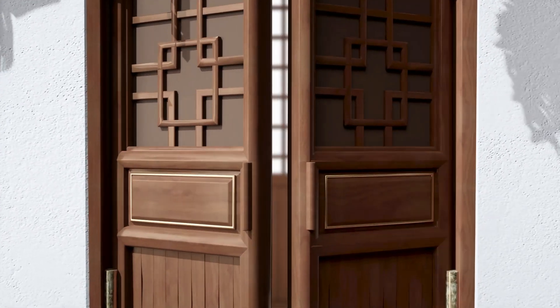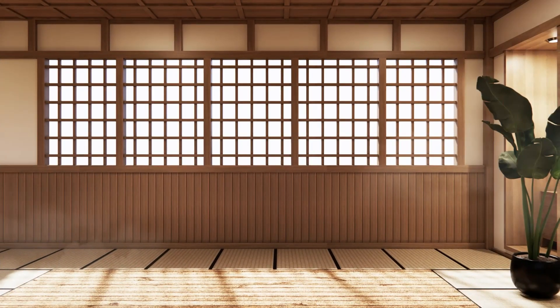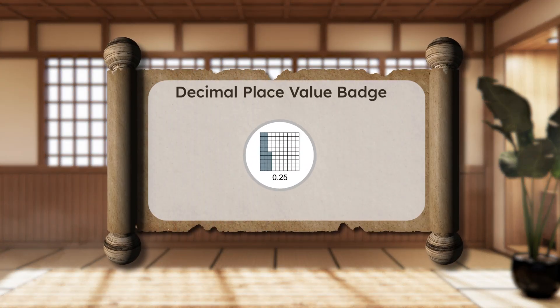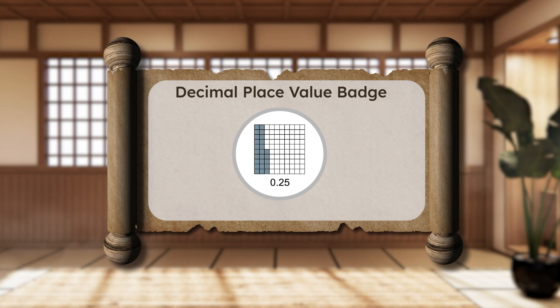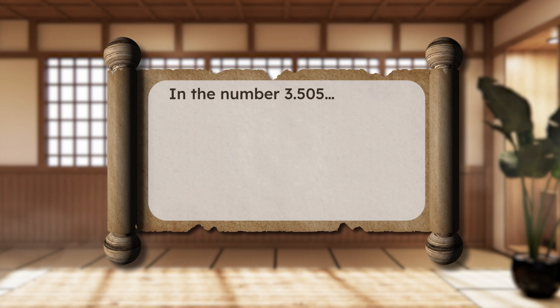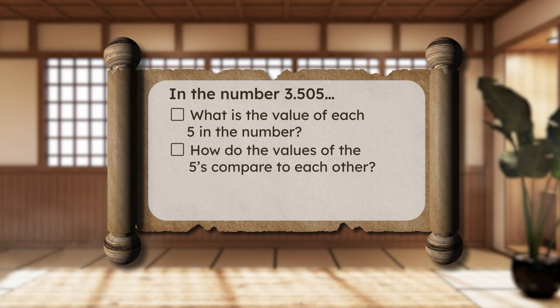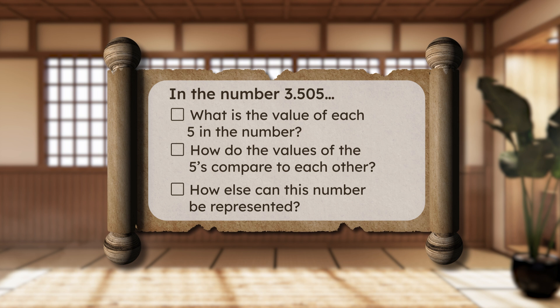Welcome back, Mathmasters! A new scroll has arrived at the dojo gates. Today, you'll begin training to earn the Decimal Place Value Badge. In the number 3 and 500 five-thousandths, what is the value of each 5 in the number? How do the values of the 5s compare to each other? How else can this number be represented? Study well. The path to mastery begins now.